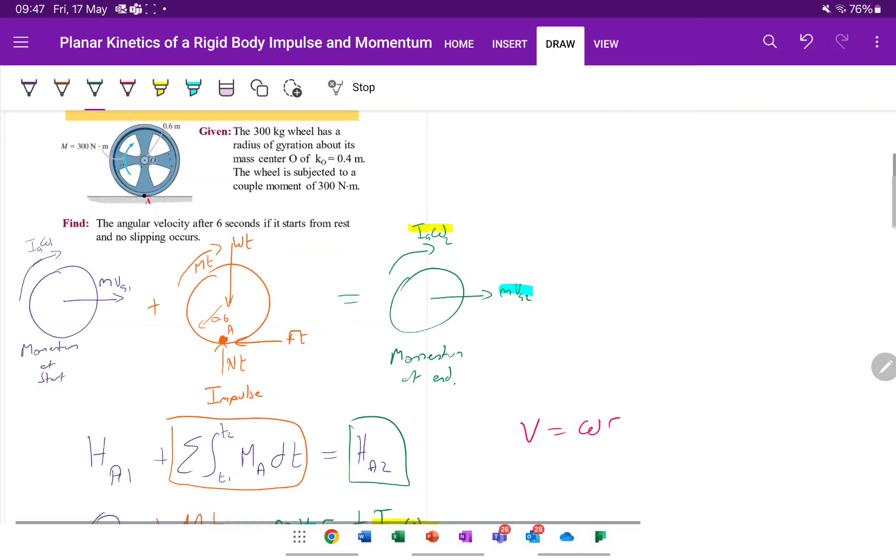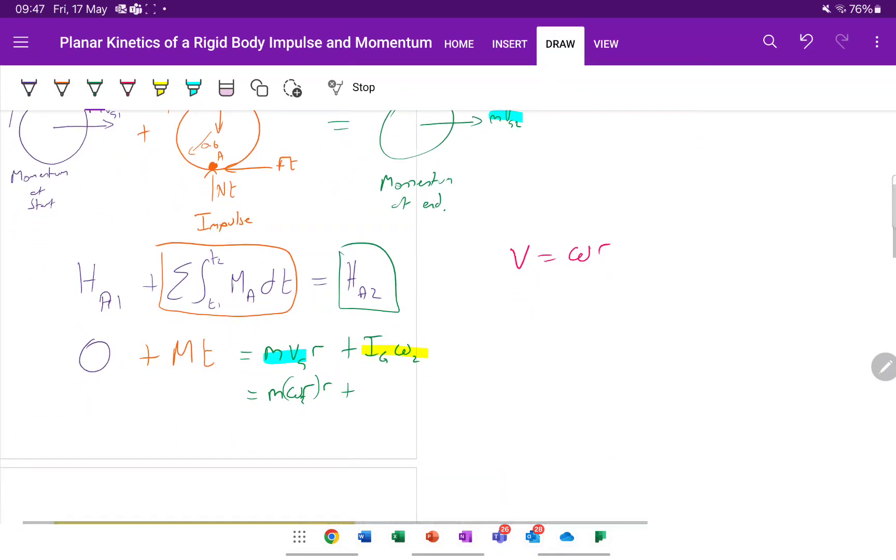Our inertia about G, within our question, we're given a radius of gyration. So I can say, well, that's the same as M, K squared, omega 2.